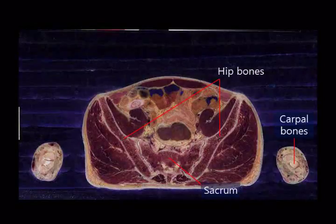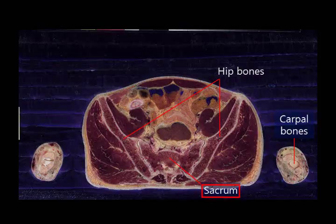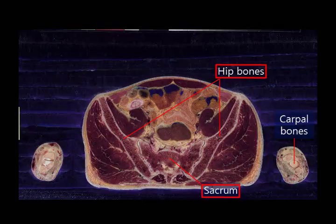The hip bones meet with the sacrum. To organize, the vertebral column consists of the cervical vertebrae, thoracic vertebrae, lumbar vertebrae, and sacrum. The hip bones are attached to the sacrum. The hip bones and sacrum both look like cylinders. When a female gives birth, the baby passes through the sacrum and hip bones.